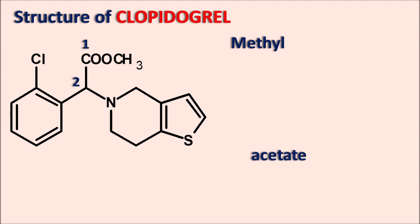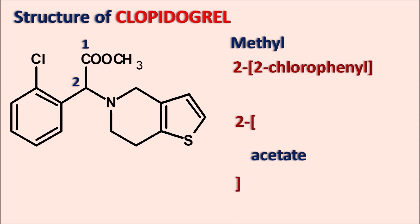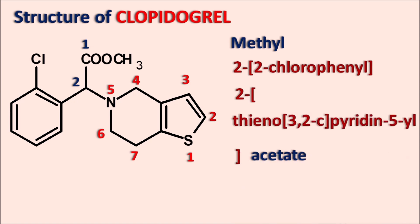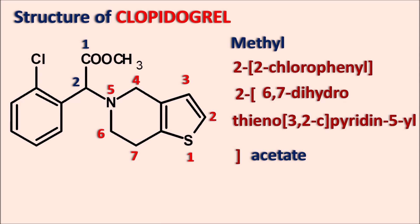At the second position of the methyl acetate, a phenyl ring is attached along with a chloro group, written as 2-(2-chlorophenyl). At the second position, the thienopyridine ring system is also present. Numbering the thienopyridine gives positions 1 through 7, and the ring is attached at the fifth position — written as thieno[3,2-C]pyridin-5-yl. The sixth and seventh positions are saturated — 6,7-dihydro — and the fourth position has an extra hydrogen — 4H. That is the complete IUPAC name of clopidogrel.